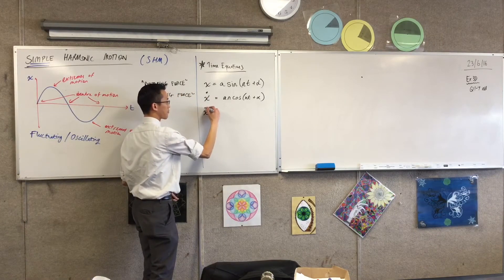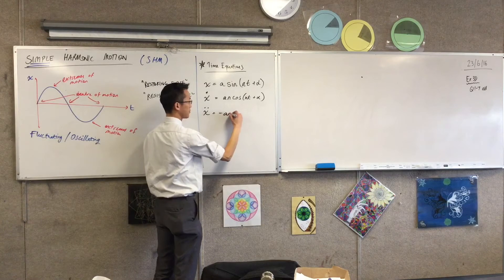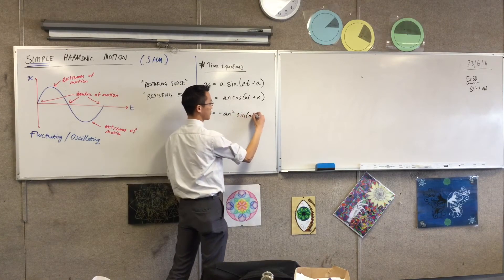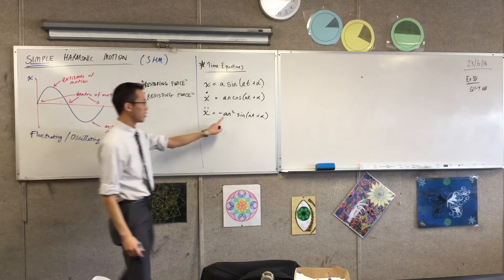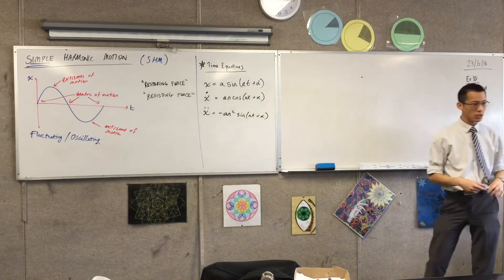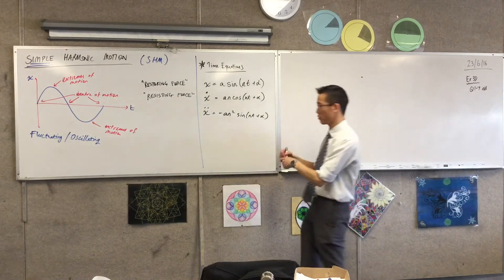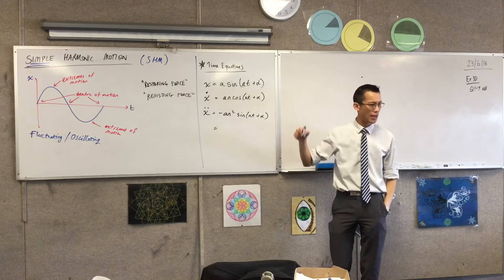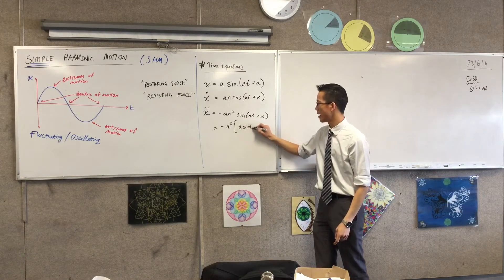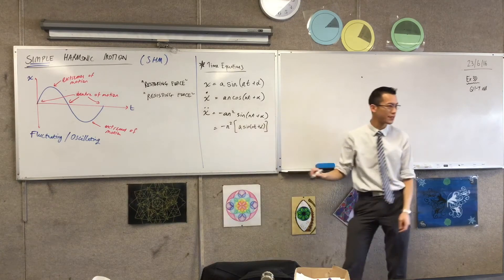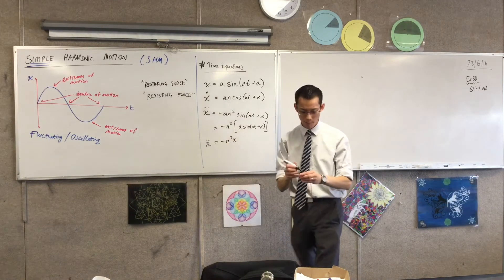I want to go one more time to the acceleration function — differentiate again. Here's what's really interesting. If you look at this last equation, you notice it is very similar to what we started with. If you take out a factor of negative n-squared, all that's left behind is A·sin(nt + α), which is exactly how we defined the displacement function. So the acceleration, x-double-dot, is in fact equal to negative n-squared times x. Put a box around that.